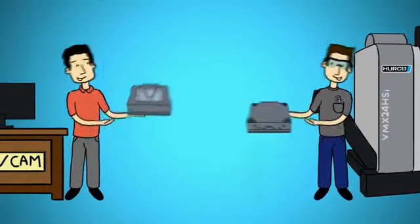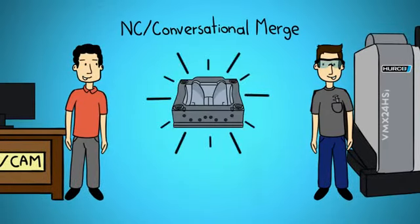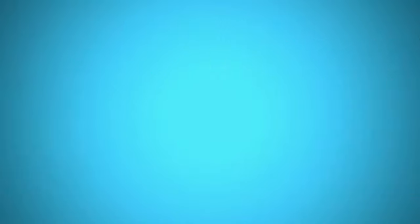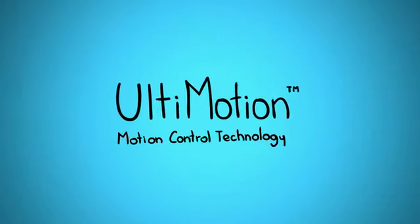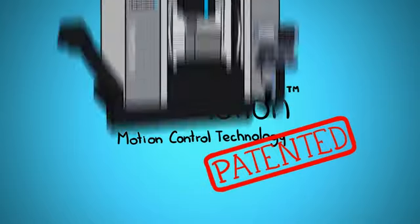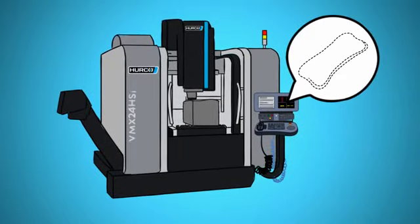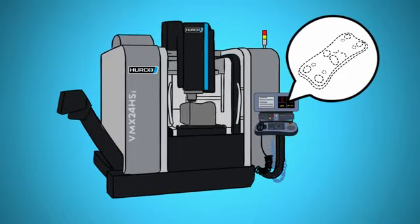You can even combine NC and Conversational together for maximum flexibility. And Herco's new motion control system, Ultimotion, uses patented technology that makes millions of software calculations to look ahead at the cuts coming up next and optimizes the toolpath and feed rate in real time to achieve the fastest cycle time.